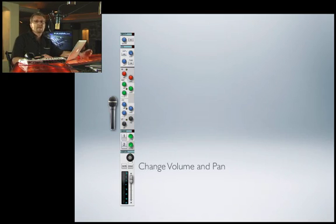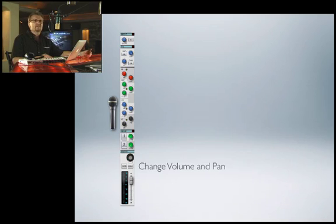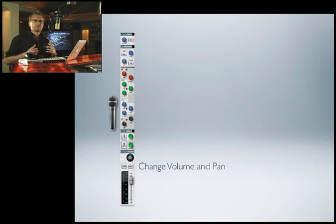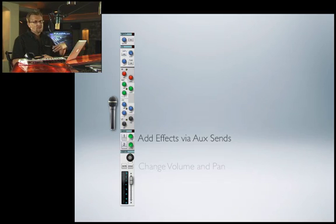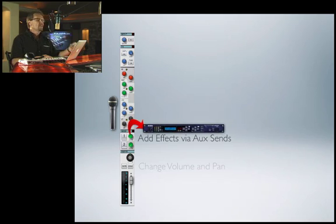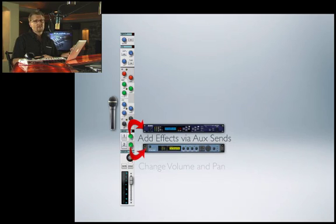Down the bottom, we can change the volume and pan via the volume fader and the pan control — we can move things between left and right in our stereo field. Then we have aux sends, which we can use to add effects. We talked before about effects sends and returns — effects loops. For example, you could have one effect on aux send one and another effect on aux send two.